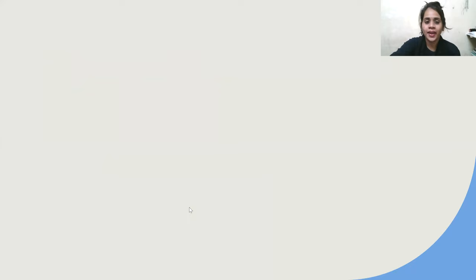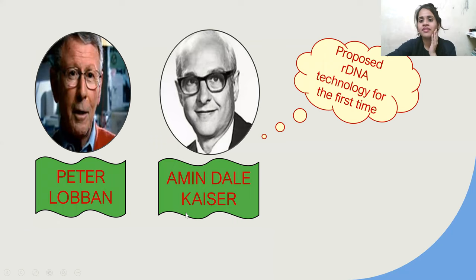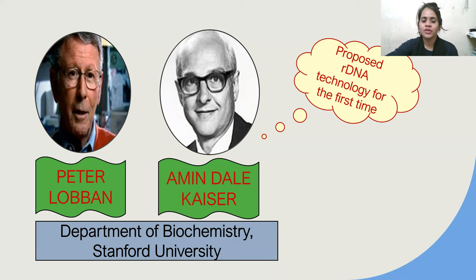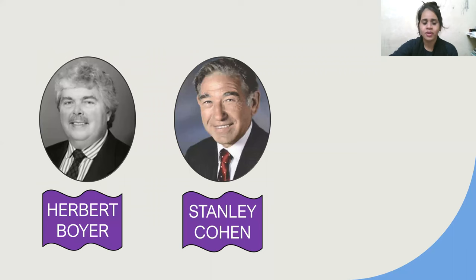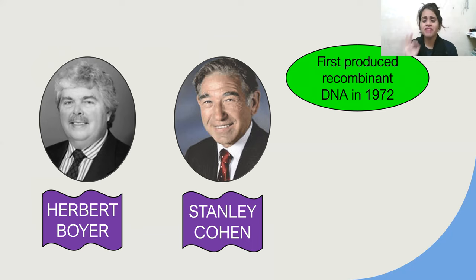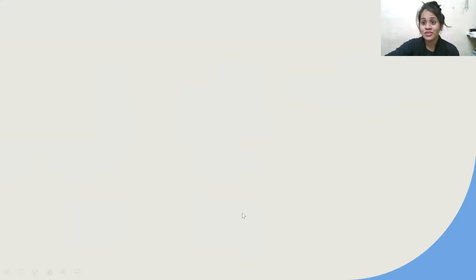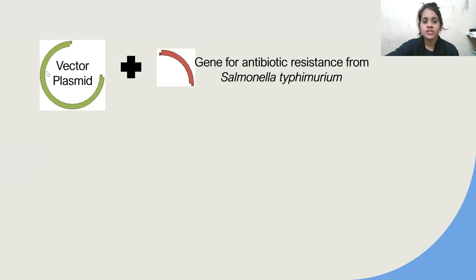Peter Luban and Ameen Dale were the persons who proposed rDNA technology for the first time, and they were from the Department of Biochemistry at Stanford University. Herbert Boyer and Stanley Cohen were the first ones to actually produce recombinant DNA — very important for an MCQ. Please write it in your notes: Herbert Boyer and Stanley Cohen produced recombinant DNA for the first time.